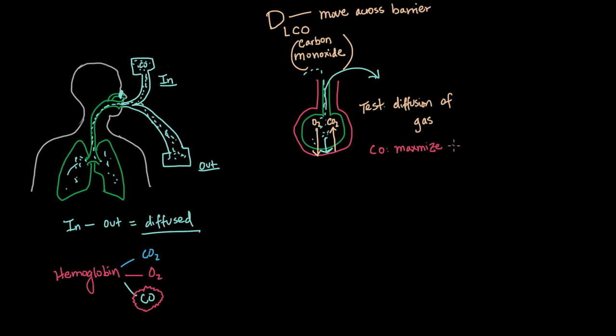Maximize diffusion. Because when the hemoglobin in the blood sees the carbon monoxide, it grabs all of it up and gives us that maximum value of how well the diffusion is happening.